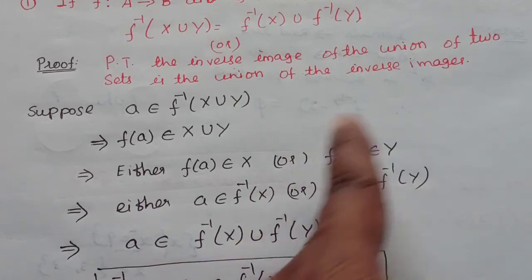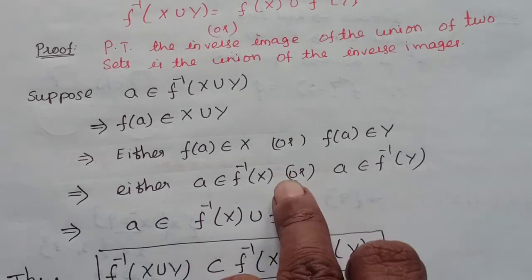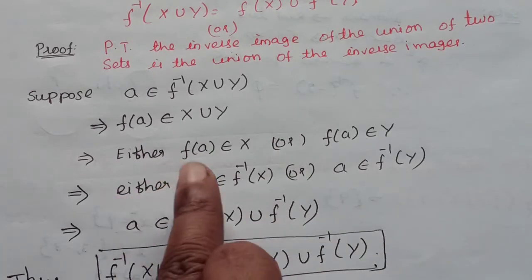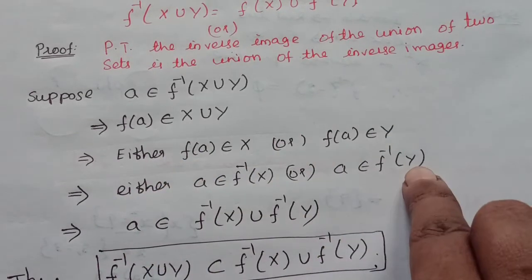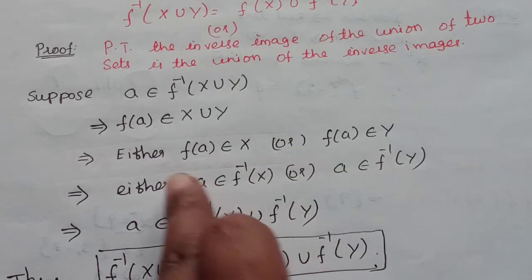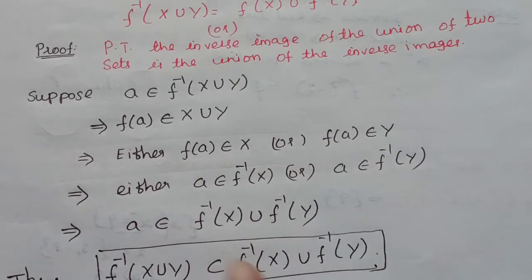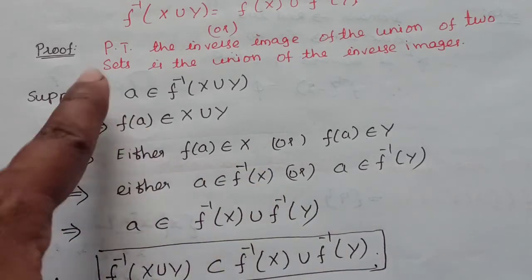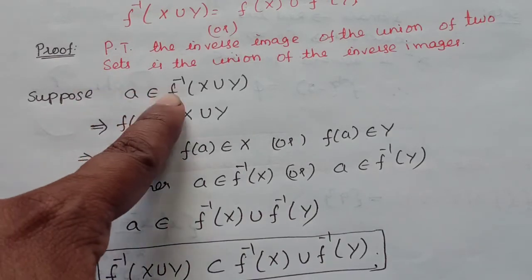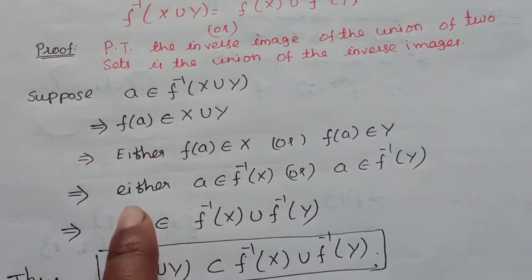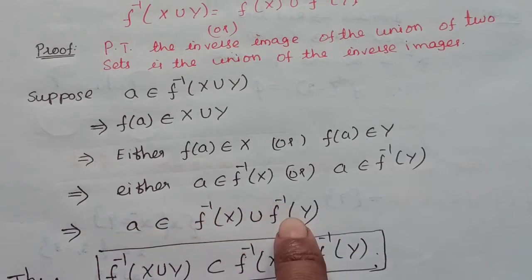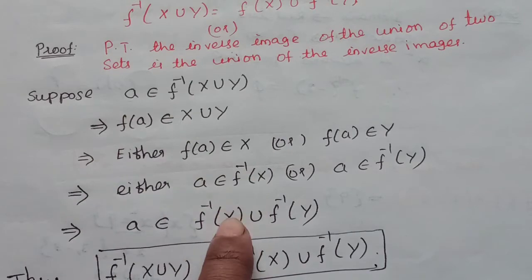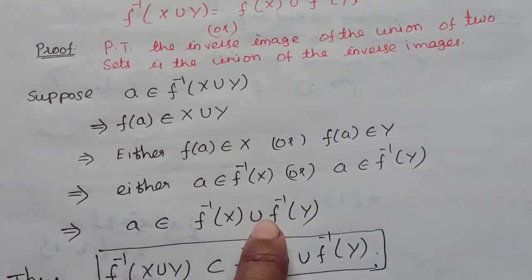A belongs to f inverse of Y. So a belongs to f inverse of X, or a belongs to f inverse of Y. This means a belongs to f inverse of X union f inverse of Y. Initially, a belongs to f inverse of X union Y. So f inverse of X union Y is contained in f inverse of X union f inverse of Y.